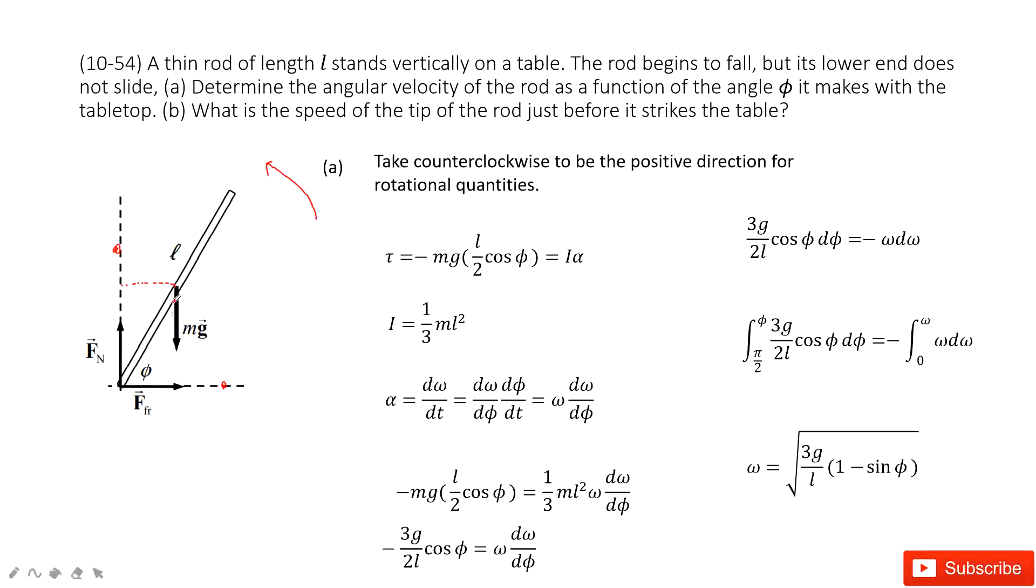So, this length is how much? We can see this is phi. This one is phi. And this is L divided by 2. So of course, this is L divided by 2 times cosine phi.